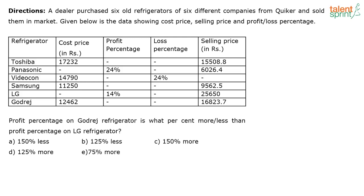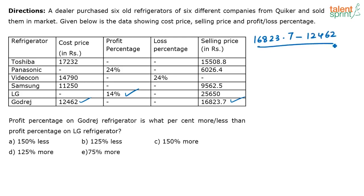For Godrej alone, you have to calculate the profit percentage using the cost price and the selling price. Get the profit percentage and then compare the two. Looking at Godrej, the selling price is 16,823 and the cost price is 12,462. The profit percentage is the selling price minus the cost price, divided by the cost price — that gives you the profit percentage.